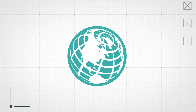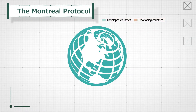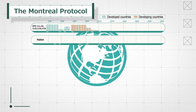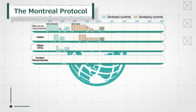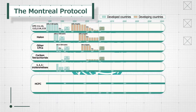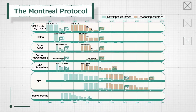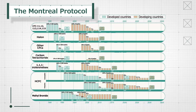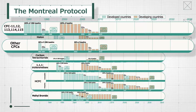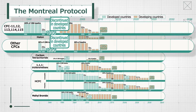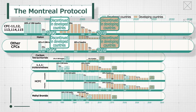Protecting the global environment is a challenge the whole world must work on. In 1987, the Montreal Protocol was adopted. Reducing the production and consumption of ozone-depleting substances, including fluorocarbon, was gradually restricted. For example, the production and consumption of CFC was discontinued in developed countries by 1996 and in developing countries by 2010.